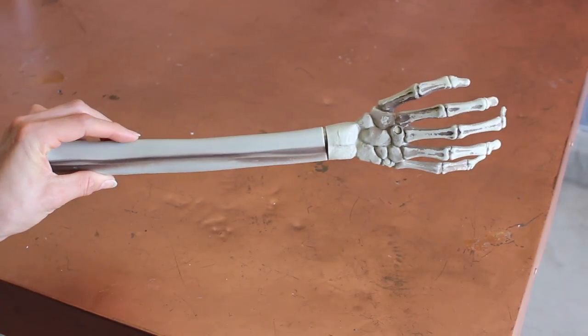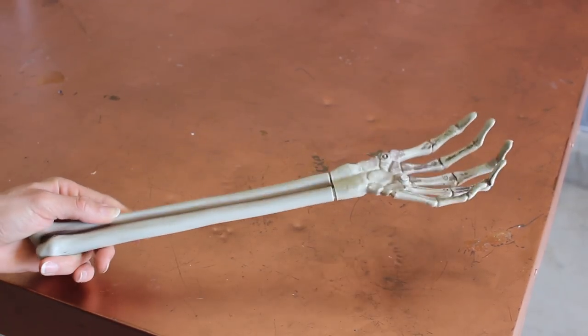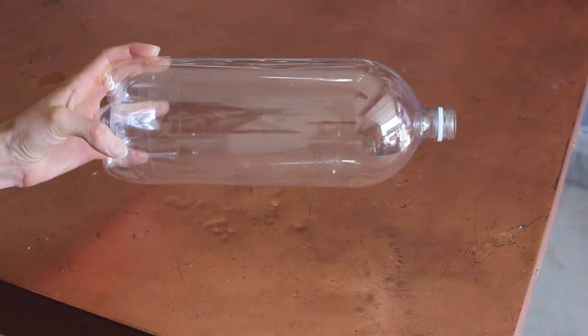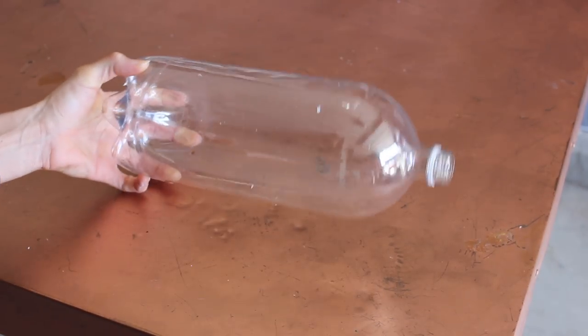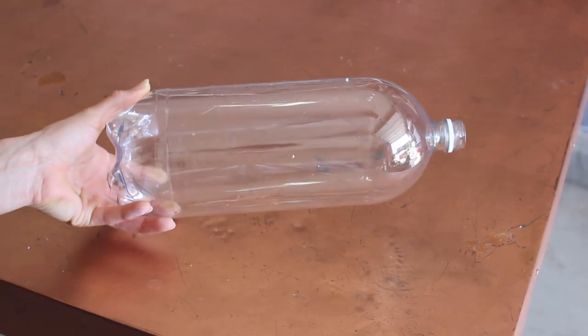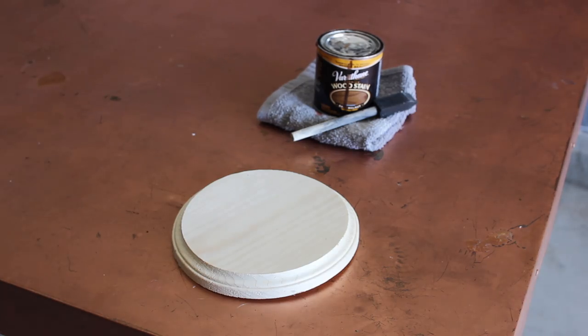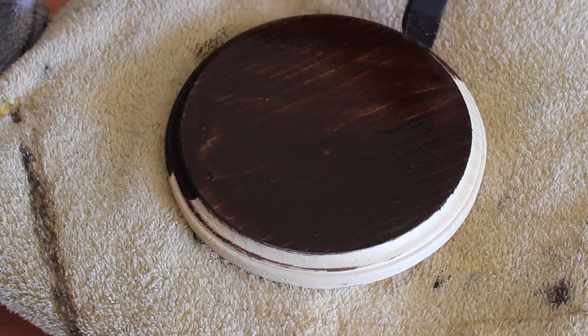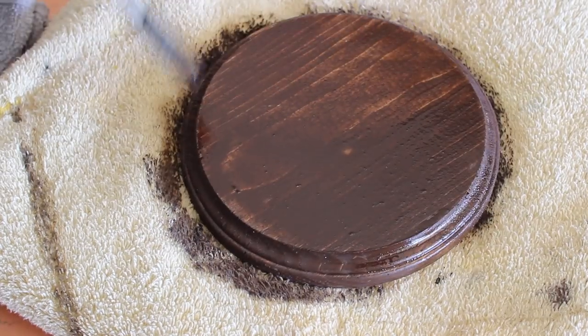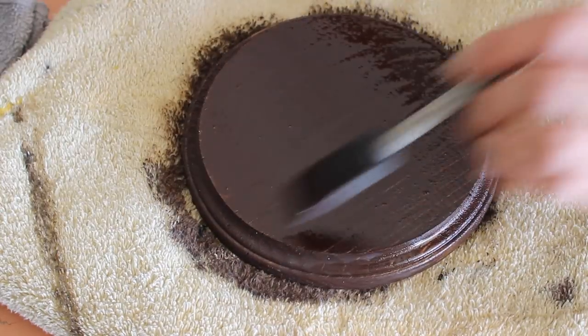I'm actually reusing this from a previous DIY for my skull sconce. You can check it out by clicking the card in the right hand corner. This soda bottle, I just washed the label off and used some canola oil to get the glue off. You want your circular wood base to be a little bit larger than the soda bottle, so make sure you're measuring appropriately. I went ahead and stained it, but you can spray paint it or leave it as is.